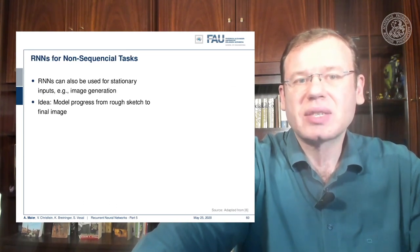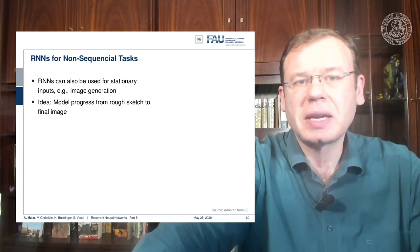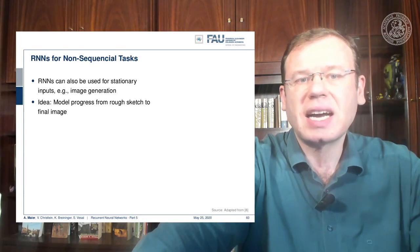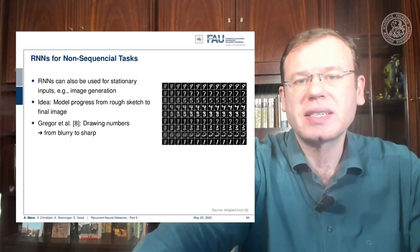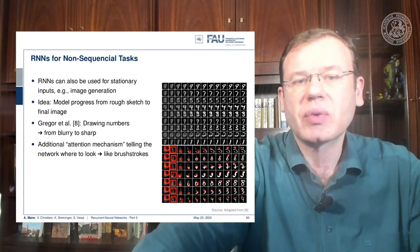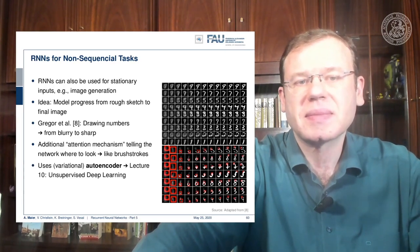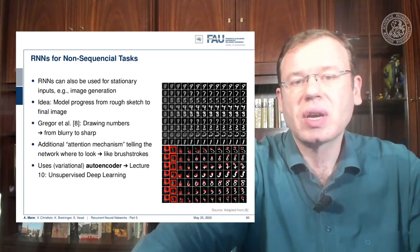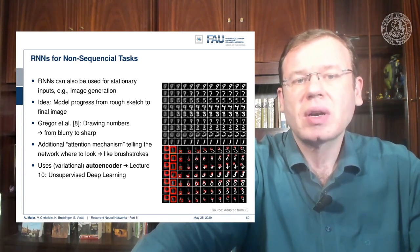There's also RNNs for non-sequential tasks. RNNs can also be used for stationary inputs like image generation. The idea is to model the process from rough sketch to final image. You can see one example here where we start essentially by drawing numbers from blurry to sharp. In this example, they use an additional attention mechanism telling the network where to look, and this generates something similar to brush strokes. It actually uses a variational auto encoder, which we will talk about when we discuss unsupervised deep learning.